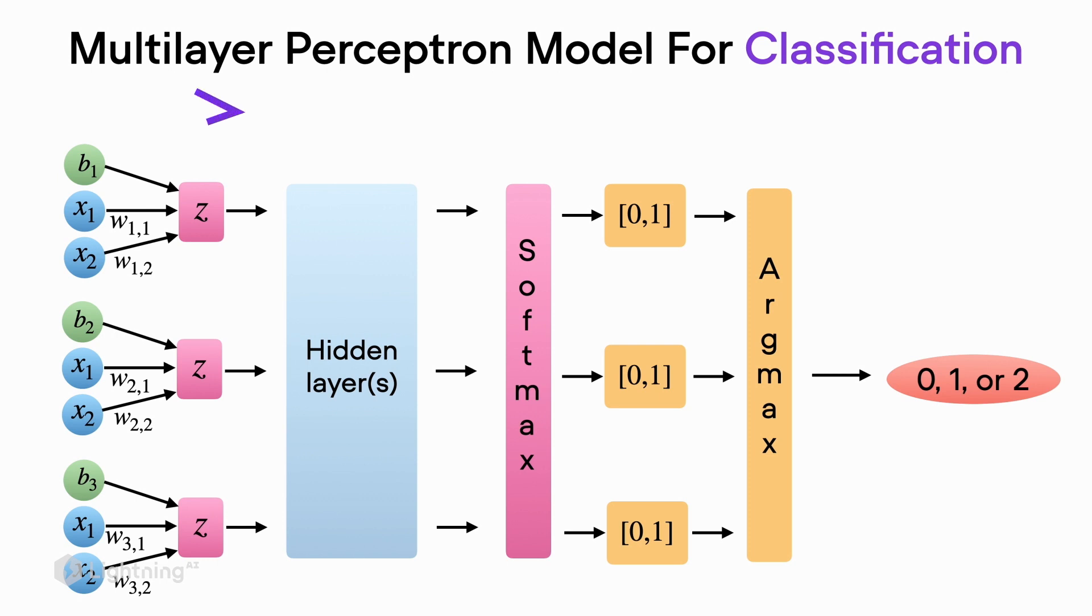We have the net inputs at the input layer, the z's, which go into the hidden layers. Then at the output layer we have the softmax activation which returns the class membership probabilities. The class membership probabilities are then passed to the argmax function which returns the predicted class label.